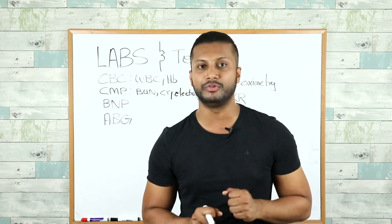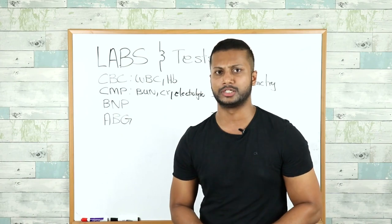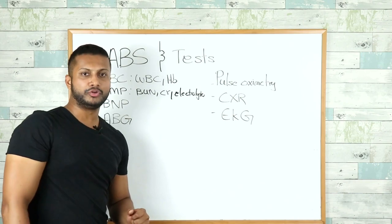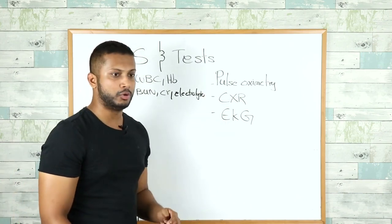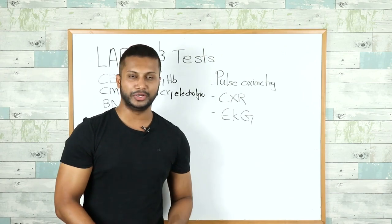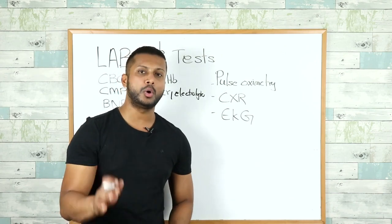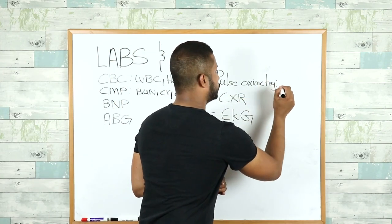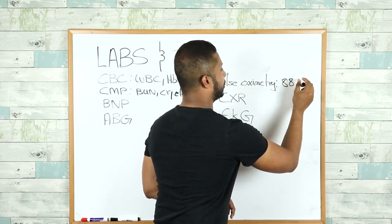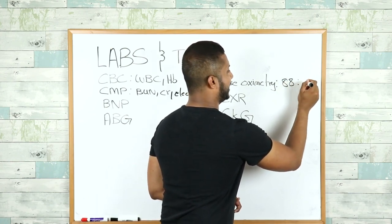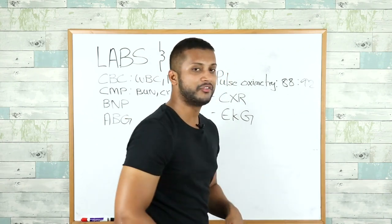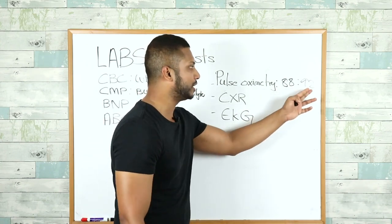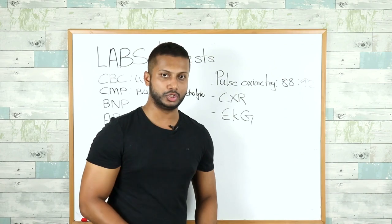Sometimes you can also get a venous blood gas if the patient is having a very mild exacerbation. For pulse oximetry, you want to monitor oxygen saturation continuously. In a patient with COPD exacerbation, targeting oxygen saturation between 88 to 92% is perfectly fine — you don't want to get to 100%, as excessively high oxygen levels are not appropriate in a COPD patient.